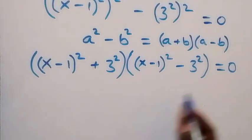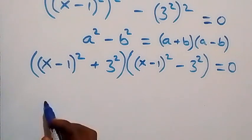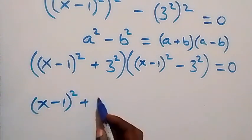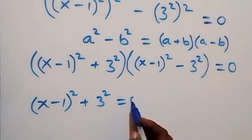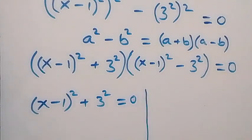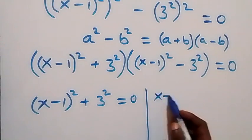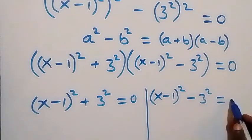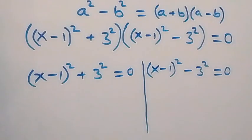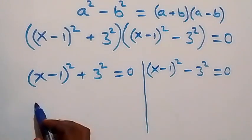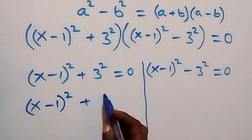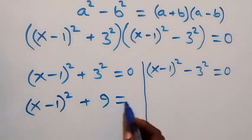Since the product equals zero, it is either the first factor which is x minus 1 squared plus 3 squared equals zero, or the second factor x minus 1 squared minus 3 squared equals zero. From the first case, x minus 1 squared plus 9 equals zero.